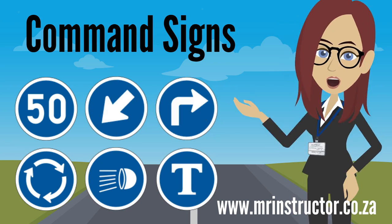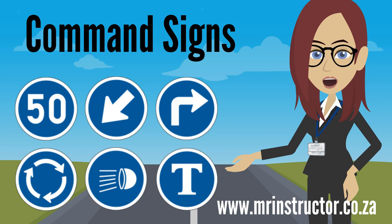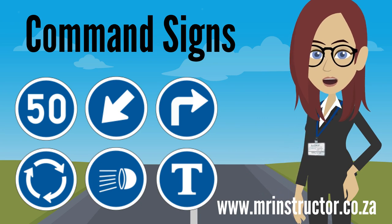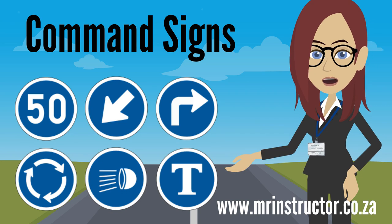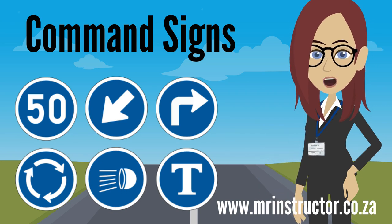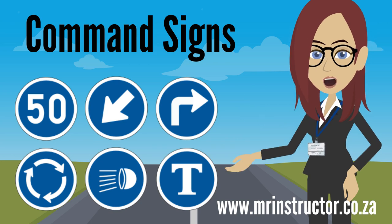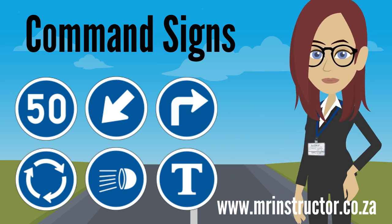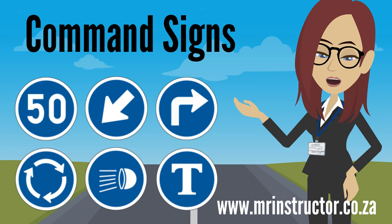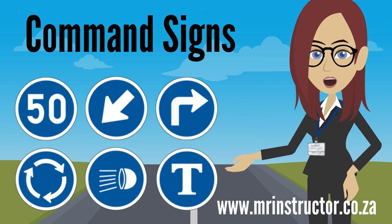Let's dive in and have a look at the general command signs. Remember, these are the ones which apply to all users on a road. The command applies from where the sign is displayed to all vehicles and across all lanes traveling in the same direction, unless otherwise indicated by being combined with another road sign.